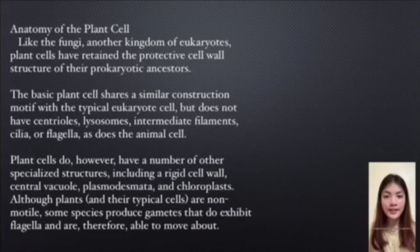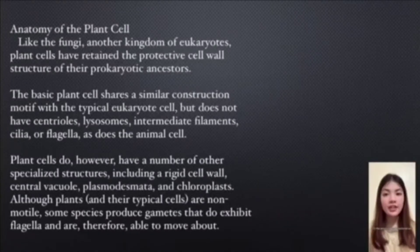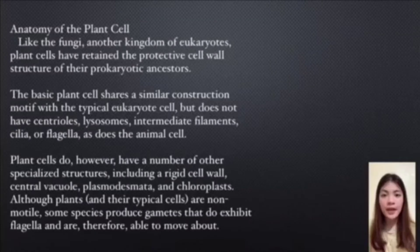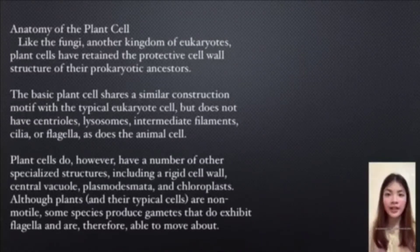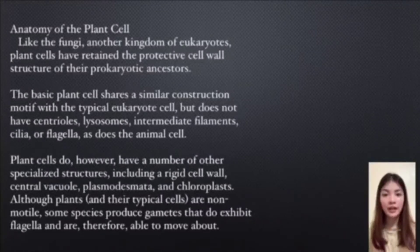A plant cell refers to any cell of a plant. It's the structural and functional unit of plants. Plant cells are presumed to have evolved from the early green algae and probably first occurred in the early Paleozoic era, more than 500 million years ago.